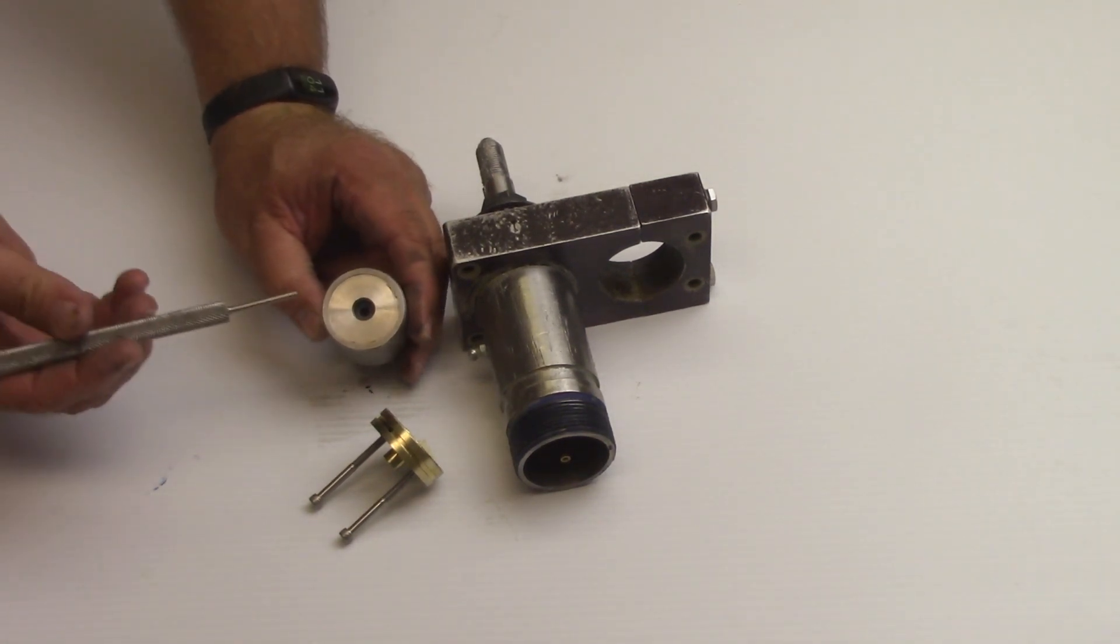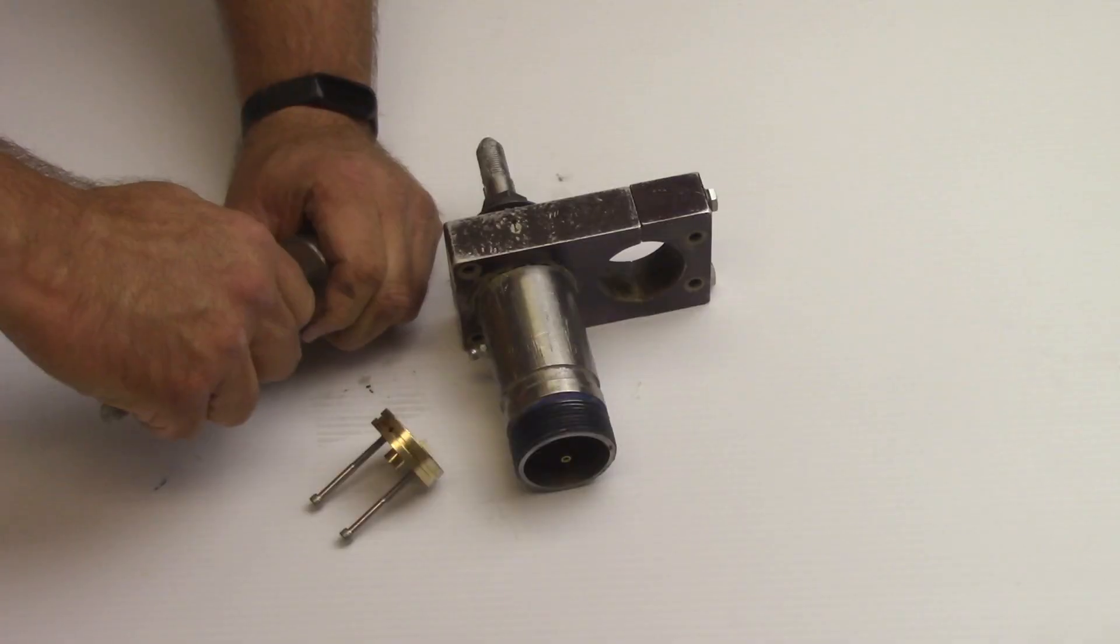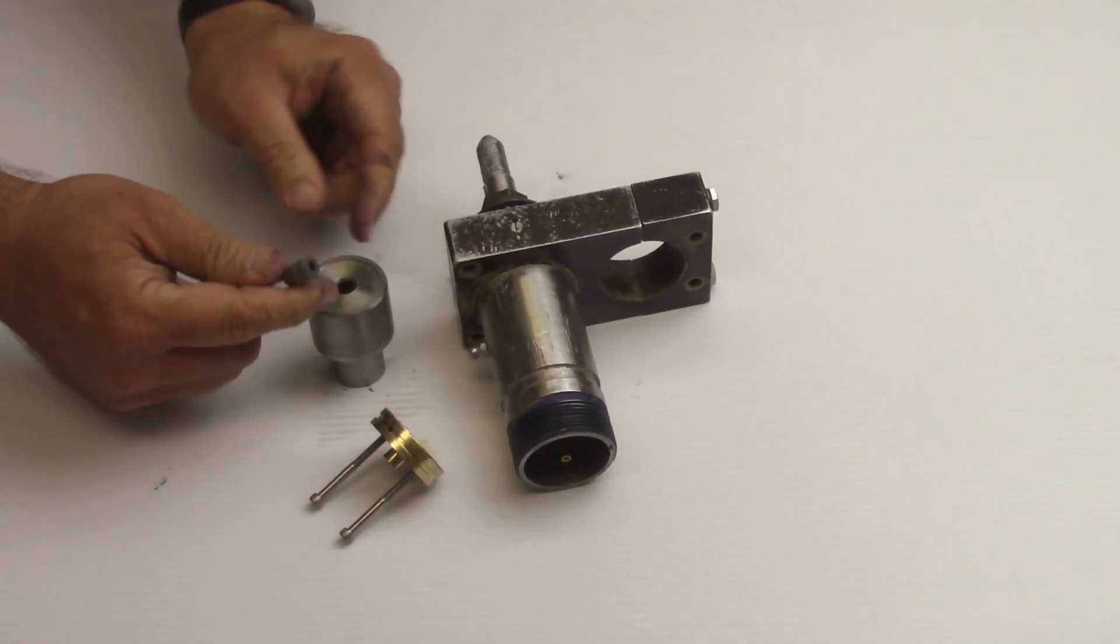Insert the seal removal tool through the center of the high pressure seal inside the seal housing. Hook the tool lip over the inner edge of the high pressure seal and pull outward to extract the shaft seal and discard.